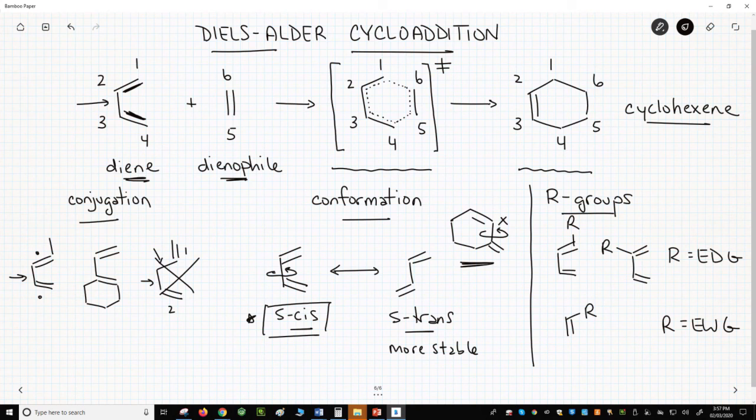Those are the essential ideas of the Diels-Alder reaction. The cycloaddition is a one-step reaction of a conjugated diene with the dienophile to form a cyclohexene cycloadduct.